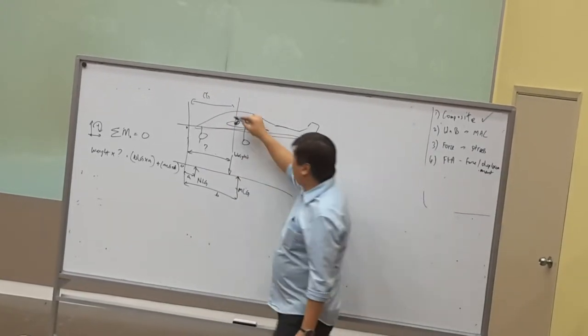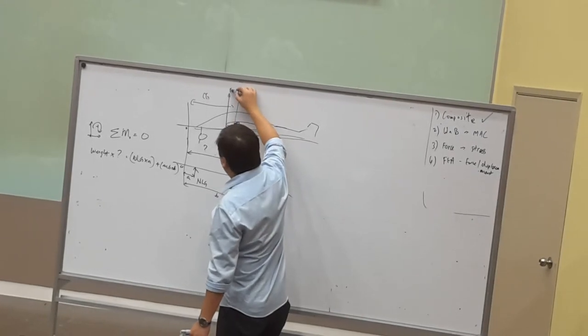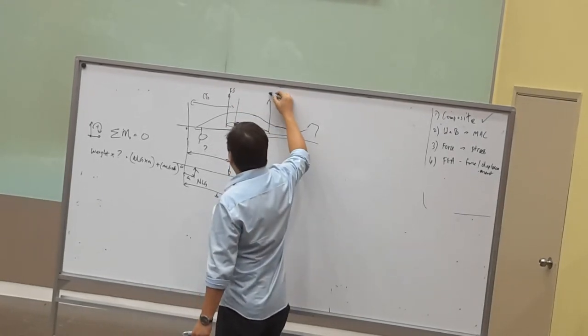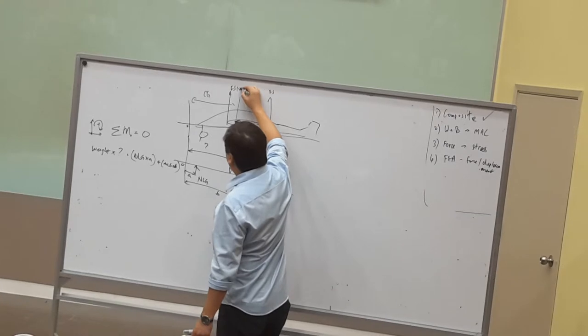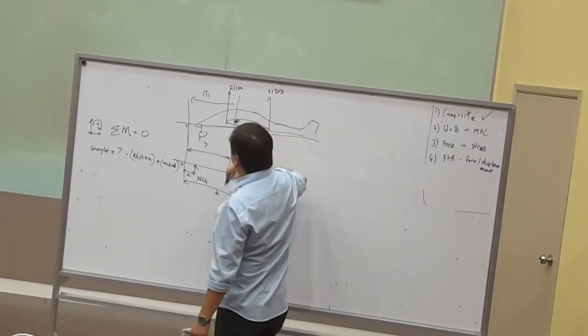Let me draw this thing up here. Here basically we will be given an FS station, here we will be given an FS station. Say for example 150, 250, say for example.